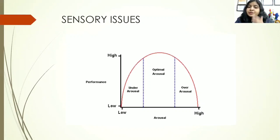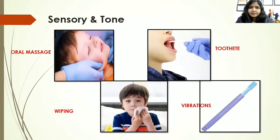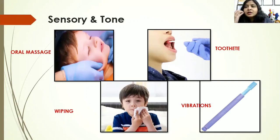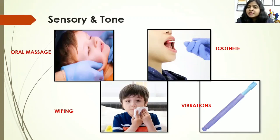Sensory issues also need to be looked into. If the child is hypersensitive or hyposensitive, we need to bring them both to the optimal arousal zone where they can function best for appropriate speech and feeding. For sensory and tone, you can use oral massage. The idea is not to do too much massage but to do it according to the child. For a low-tone child, do it in short spurts to activate or stimulate the muscle. For a high-tone child, we need to relax the muscles, so it should be sustained massage.